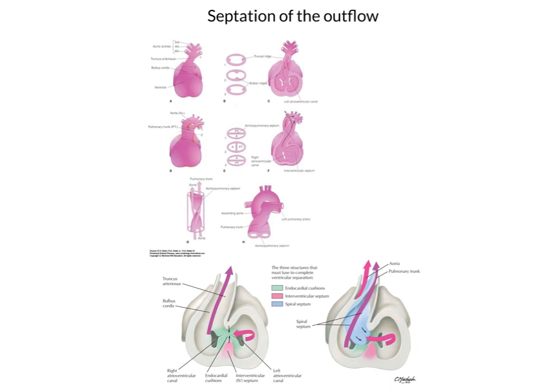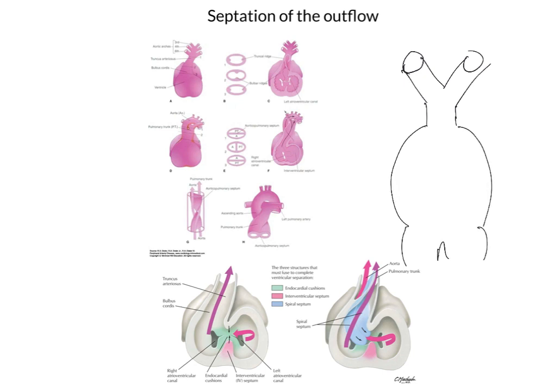When we're talking about the septation of the outflow, remember, really what we're talking about is the septation of the truncus arteriosus. So here are our vessels which are going to feed into the aortic arches, here's our truncus arteriosus, and our primitive ventricle with our primitive atrium just here. And what we're going to be looking at is the septation of the truncus arteriosus.